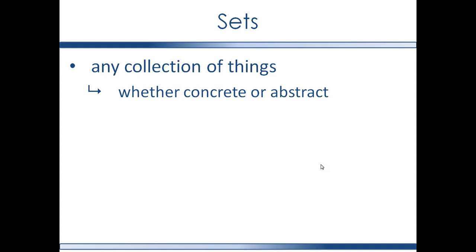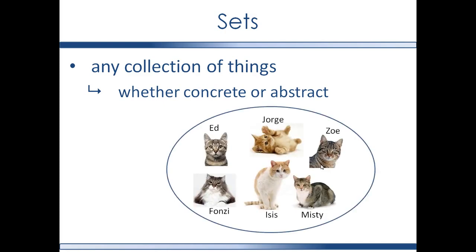Sets. A set is any collection of things, whether concrete or abstract, real or imaginary. It can be a collection of objects, entities, or processes. So here, for example, you can have a set of cats. You can say that this is the set of all cats in the Gilbert household.